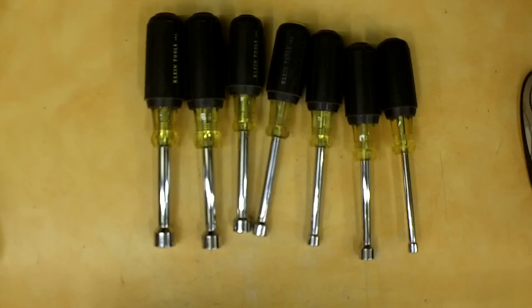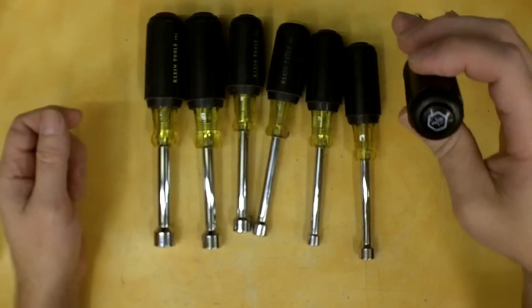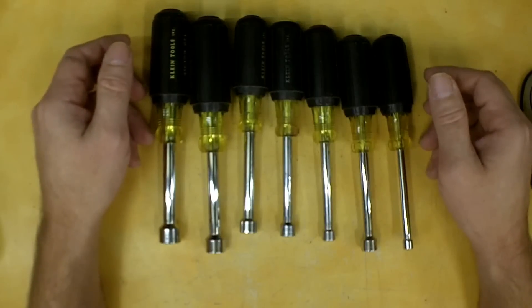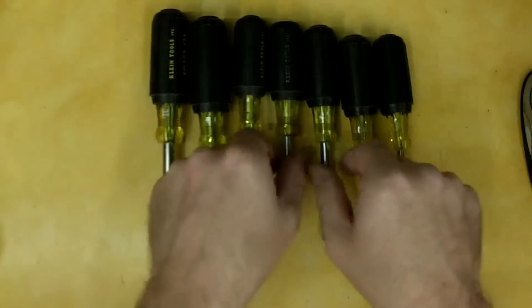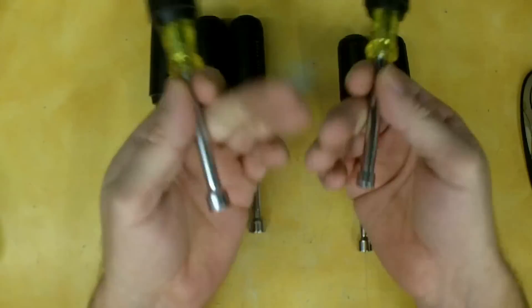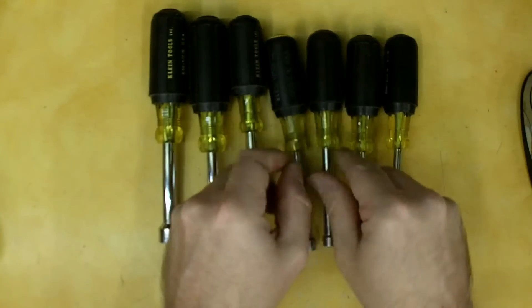I can't give prices on any of these tools because I bought them here and there over years. This is a seven piece nut driver set. It goes from three sixteenths up to a half inch. Now if anybody's using these for plumbing, the two common sizes that you're going to use is the red and the yellow, quarter inch and five sixteenths. Those are the ones that you're going to be going to.